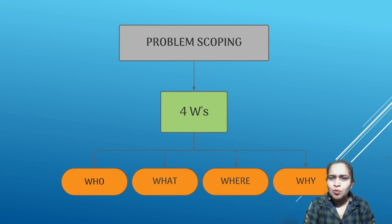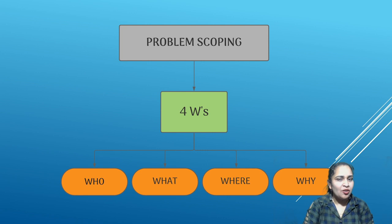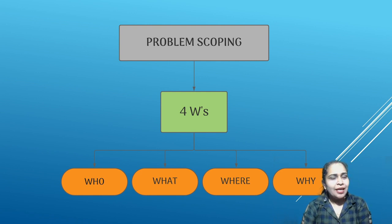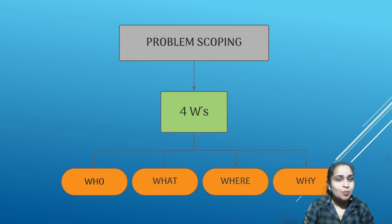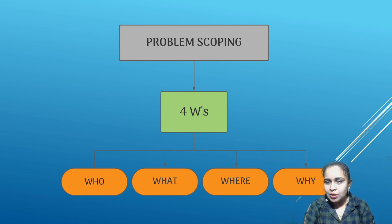'Where' also means whether it is an in-house or external problem. For example, suppose production in a company is going low day by day. The reduction in production could be due to the speed of machines — an internal problem — or it may be because they are not getting proper raw material on time, which is an external problem. So we have to identify the location of the problem.